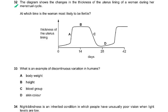Question number 32: The diagram shows the changes in the thickness of the uterus lining during a woman's menstrual cycle. At which time is the woman most likely to be fertile? In the first five days the uterus lining is shed, then it repairs and increases in thickness, then remains thick before shedding again. The time when the thickness is greatest and constant is when the woman is most likely to be fertile.